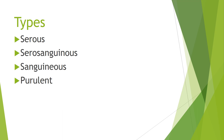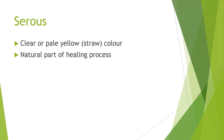The first type of drainage we're going to cover is serous, then serosanguinous, then sanguinous, and then purulent. Serous drainage is a clear or pale yellow, kind of like a straw color fluid, and it's a normal part of the healing process — nothing to worry about.